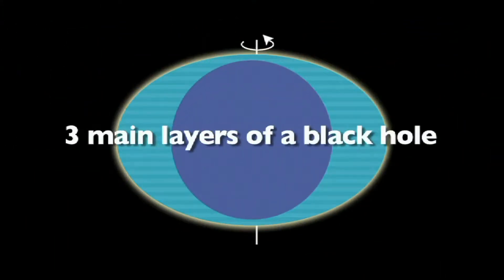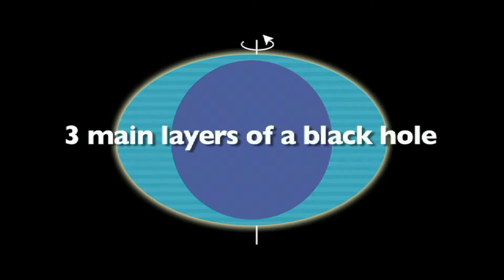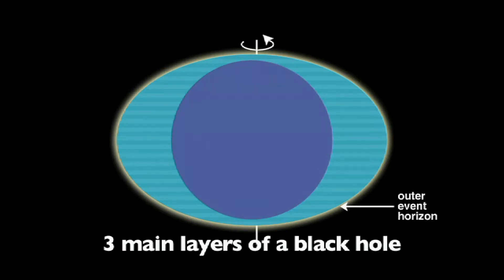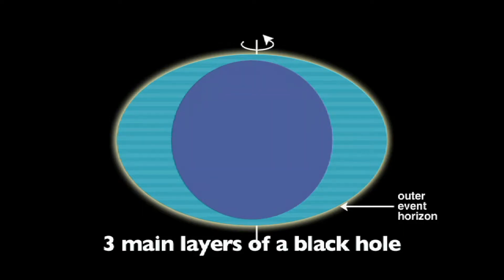There are three main layers of a black hole. The outer event horizon is the outer edge of the black hole. At this layer, things can still escape the pull of the black hole.